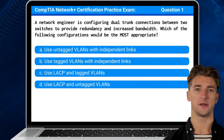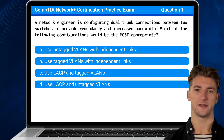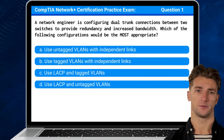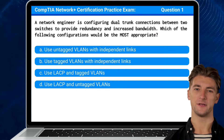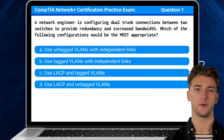Question 1. A network engineer is configuring dual trunk connections between two switches to provide redundancy and increased bandwidth. Which of the following configurations would be the most appropriate?